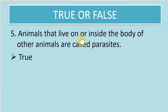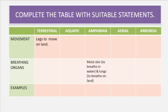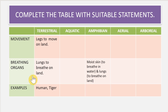Next is to complete a table with suitable information. The given statements include that terrestrial animals move on land using legs, and amphibians breathe using moist skin and lungs on land. We need to fill in the table for each animal type one by one.